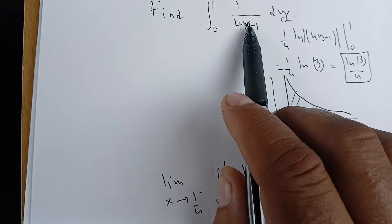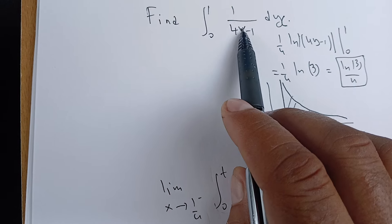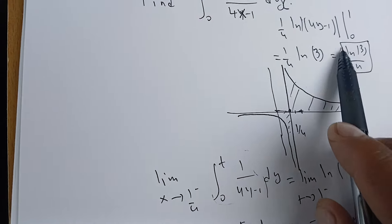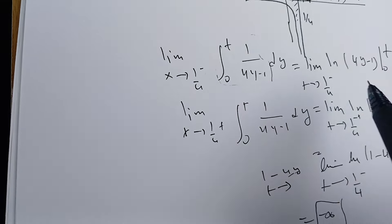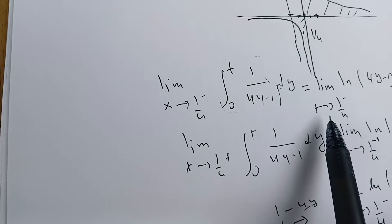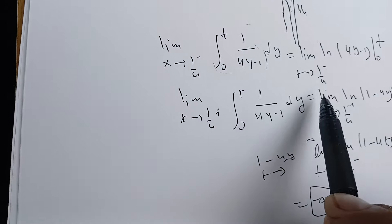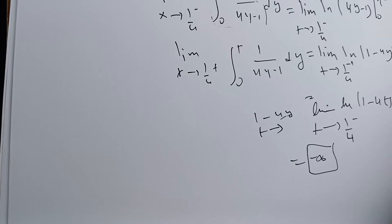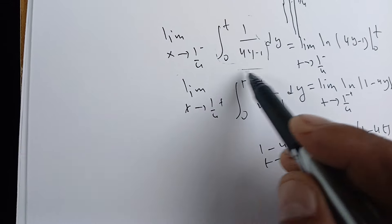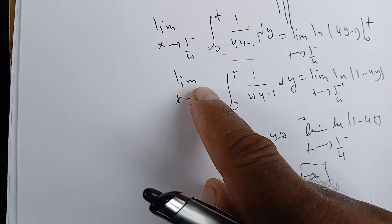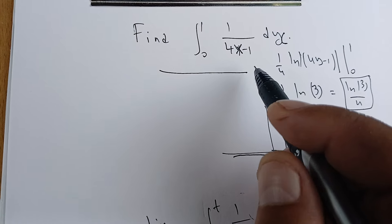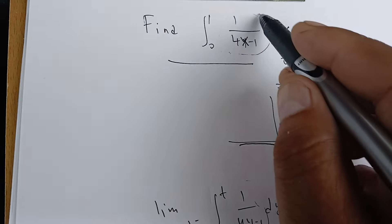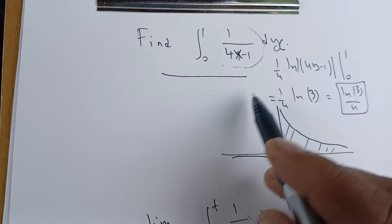So instead of naively concluding that the answer is just the natural log of 3/4 without noticing the discontinuity at 1/4, we now see this is wrong. Computing the limit from the left gives infinity, so we don't need to compute from the right — even if the right-side limit were finite, the integral is still divergent. The key lesson: always check for discontinuities in your function before proceeding with the computation.